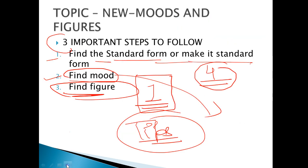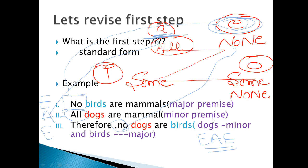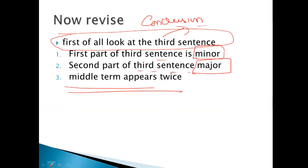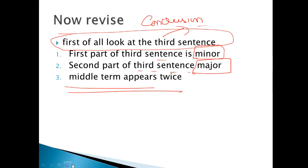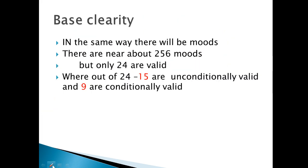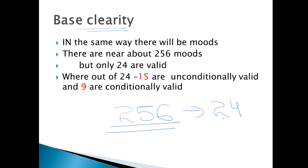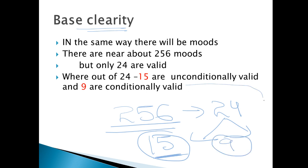Third step है figure — कौन से figure में आता है. Figure के लिए अलग step है जो हम next lecture video में discuss करेंगे. आज की class में हमने mood and figure को identify करना सीखा. I hope you are clear with this. एक theoretical चीज़ याद करा देती हूँ — total हमारे पास 256 moods होते हैं, जिसमें से सिर्फ 24 valid हैं. उनमें से भी सिर्फ 15 याद करनी हैं, और उनमें से 9 conditionally valid हैं. वो हम आने वाली video में discuss करेंगे. Thank you guys for watching.